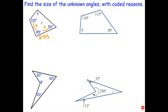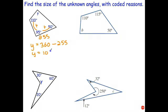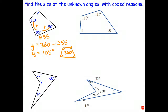Therefore, we can say angle Y must be 360 — the total of all the angles — minus 255. And therefore Y must be 105 degrees. For the coded reason, all you need to draw is a quadrilateral with the angles marked, and you can put 360 in there to indicate that the angles of a quadrilateral add to 360 degrees.